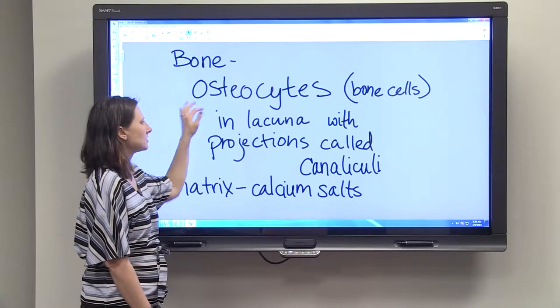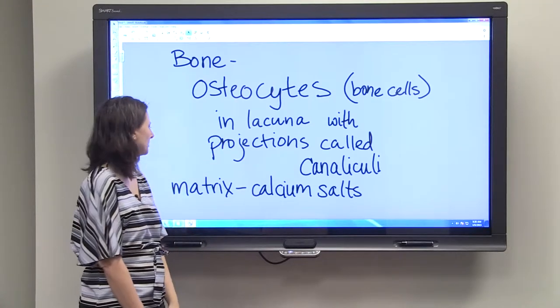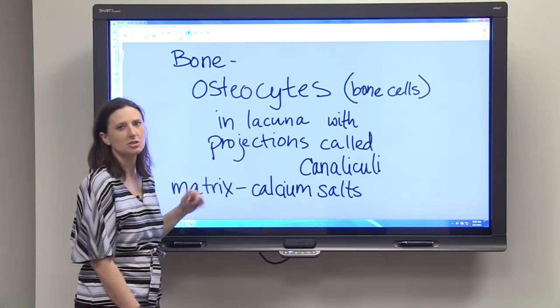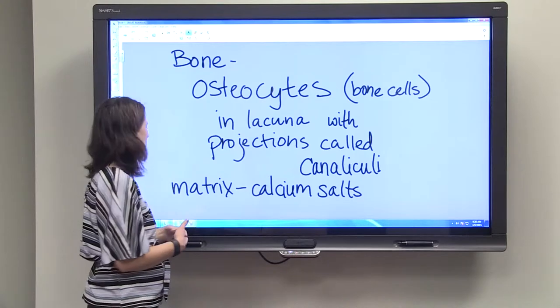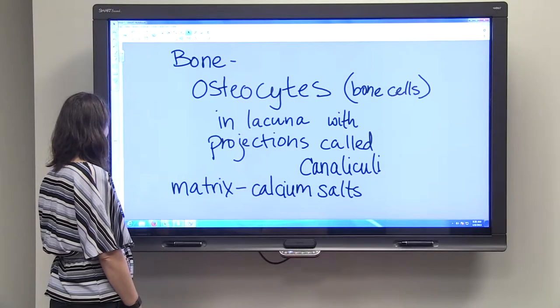Osteocytes are located in lacuna, and they have projections called canaliculi. Since bone is a connective tissue, it's laid down in a matrix. The matrix is made up of calcium salts.